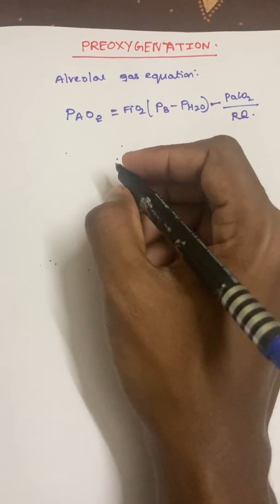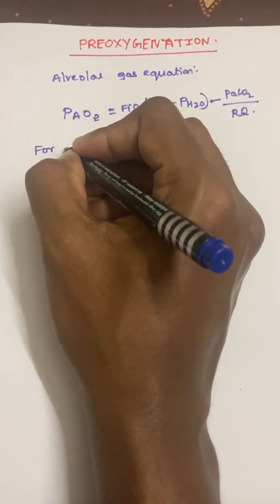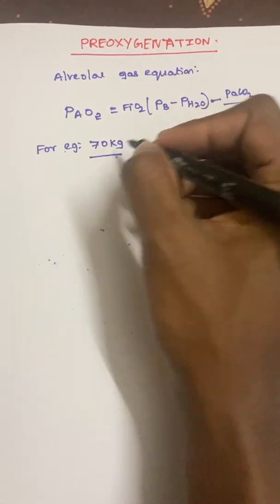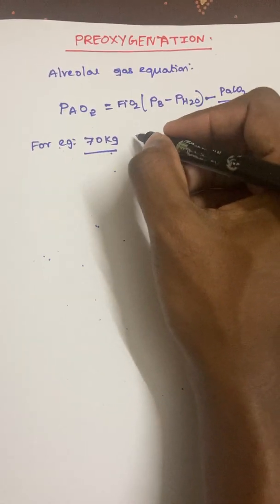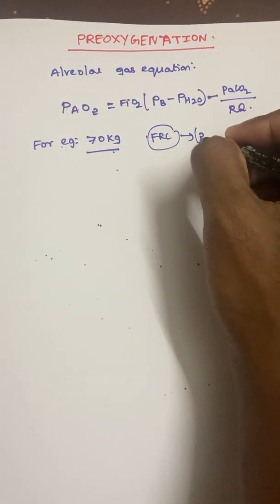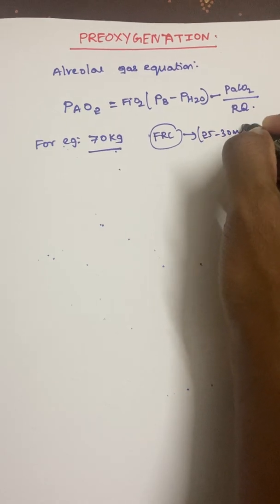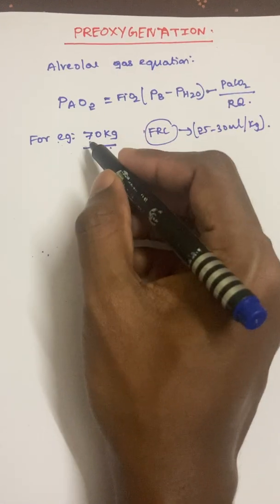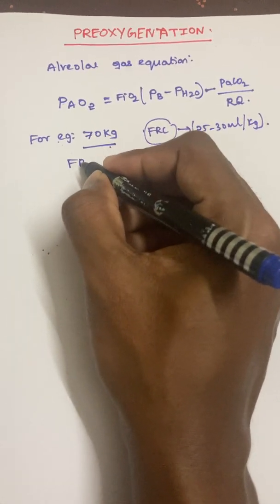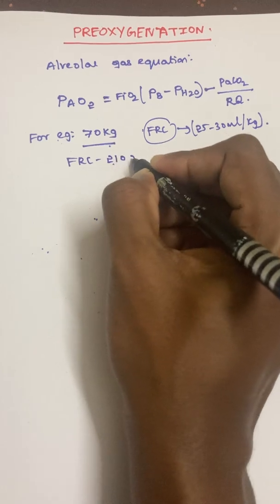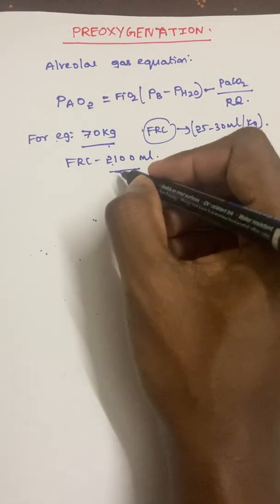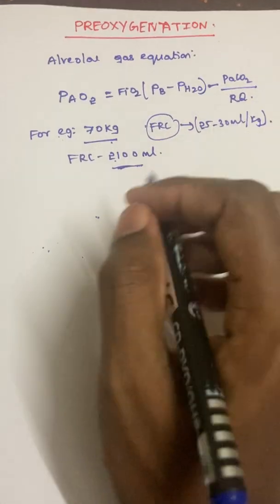Consider a 70 kg individual. FRC is approximately 25 to 30 ml per kg. If we take 30 ml/kg, the total FRC for this individual will be around 2,100 ml. For easier calculation, we approximate FRC as 3 liters.